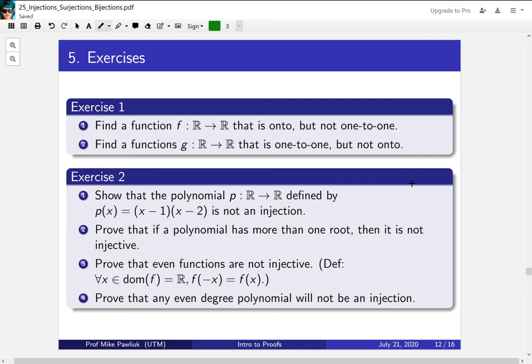The second exercise is about polynomials. Show that the polynomial p(x) = (x - 1)(x - 2) is not an injection. And in fact, prove that if a polynomial has more than one root, then it is not injective. If you draw the picture of this it should be obvious.